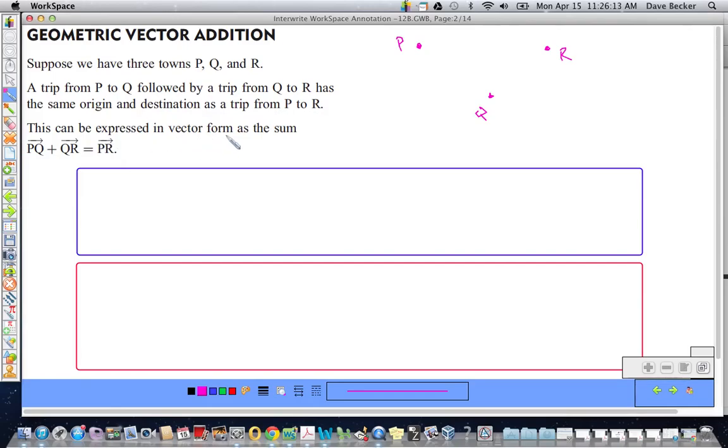This can be expressed in the vector form as the sum PQ plus QR equals PR. What in the world does that mean? Well, let's take a look.